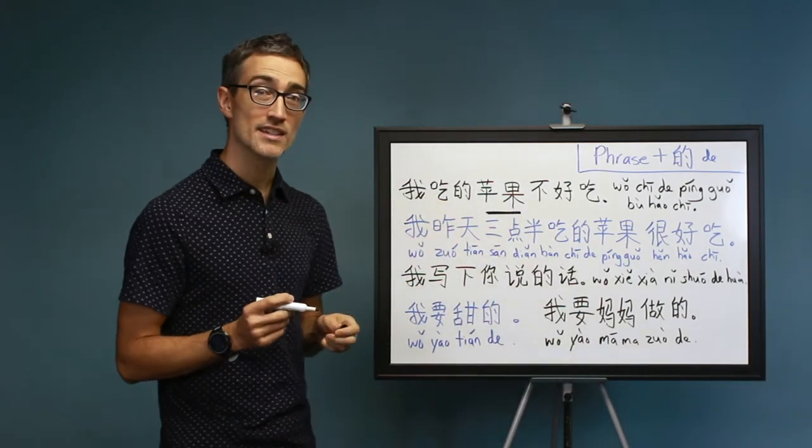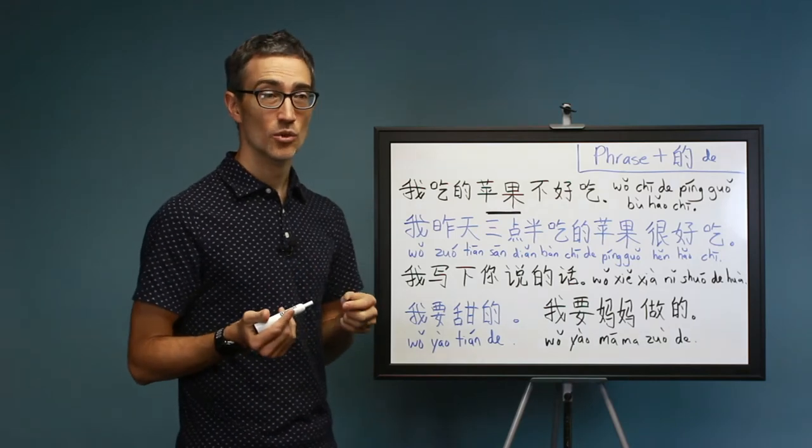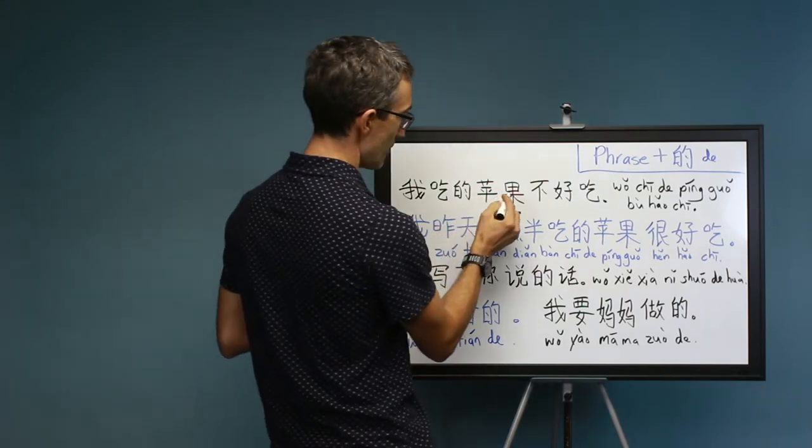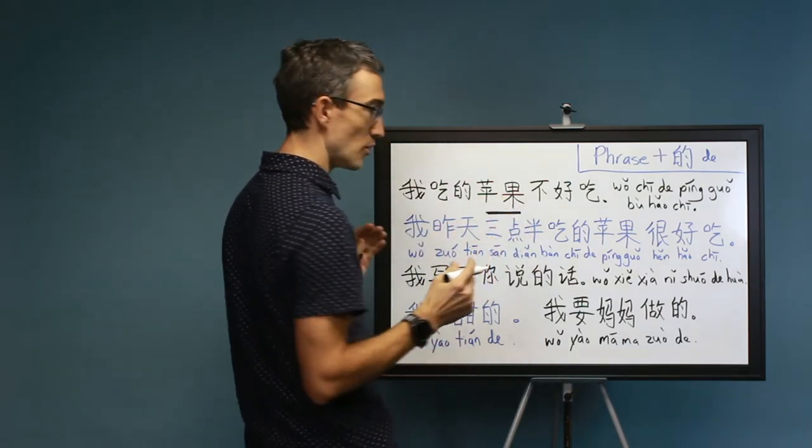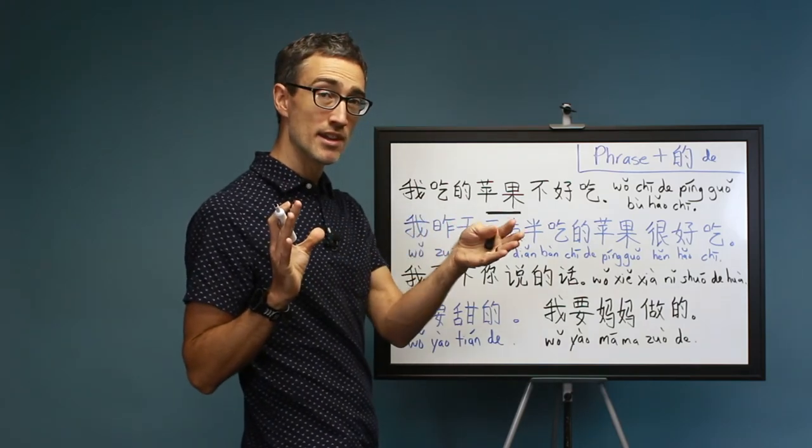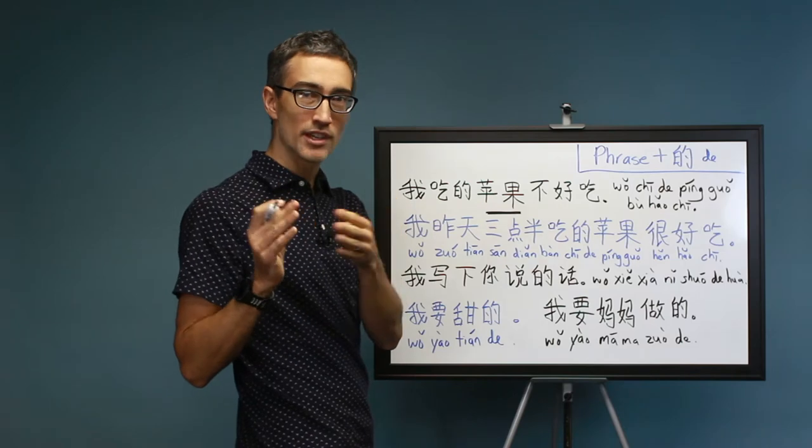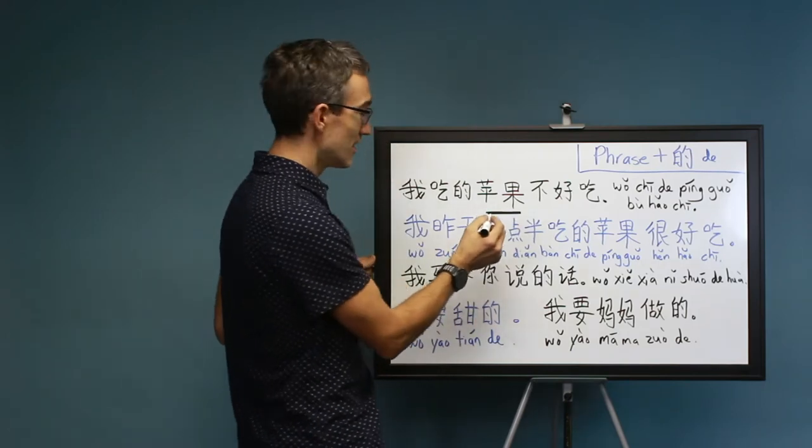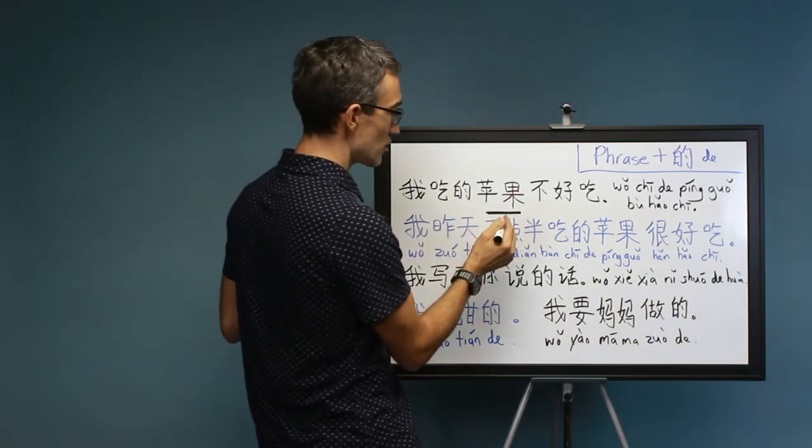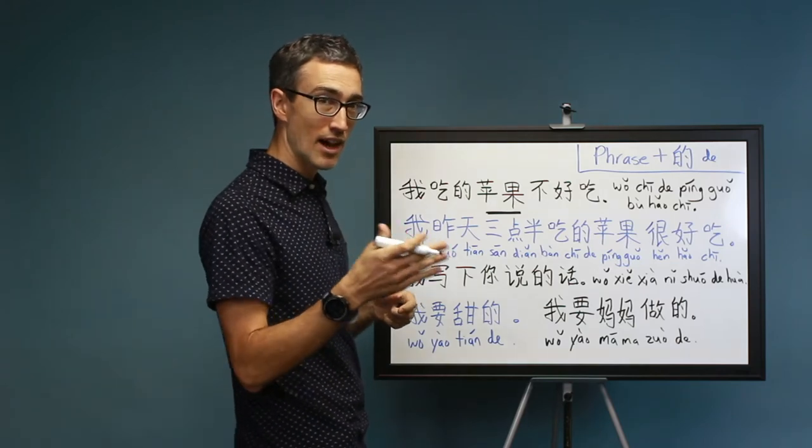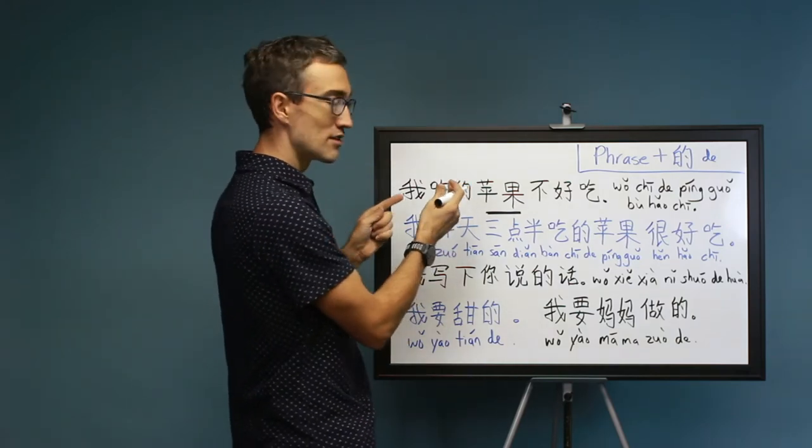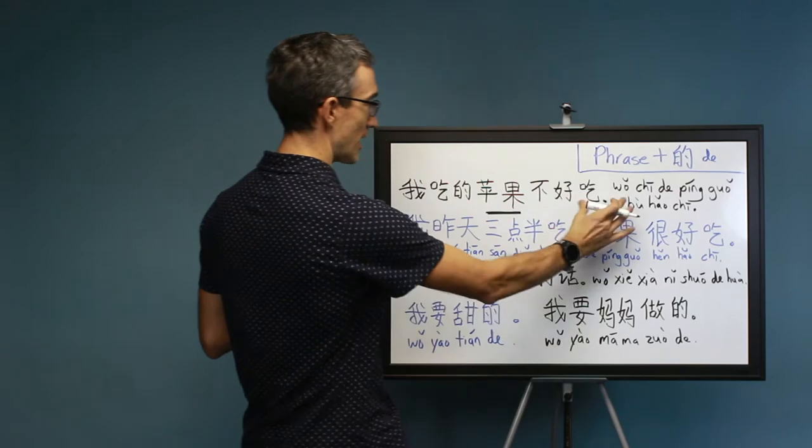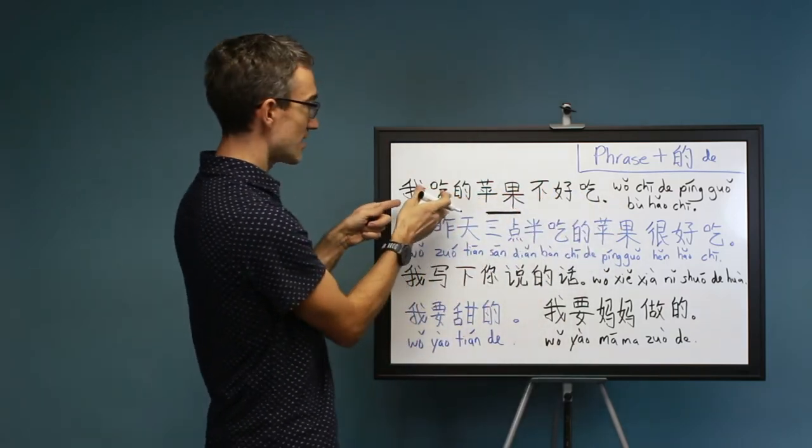What it says is, wo chi de ping guo bu hao chi. I eat the apple, it's not good. The noun in this sentence is right here, this is the subject. Ping guo, apple. What I'm saying is, the apple that I ate was not good, or the apple that I'm eating is not good. It depends on context. So in English, it's the apple that I ate, or the apple that I'm eating. The noun is apple, and it comes in the beginning of the sentence. Here, the noun is here, it's not in the beginning because there's an adjective phrase before it.